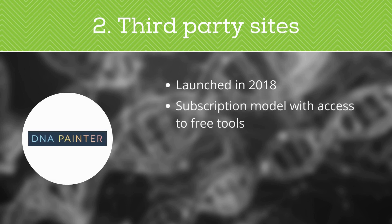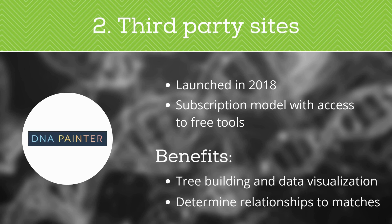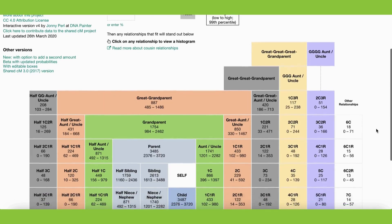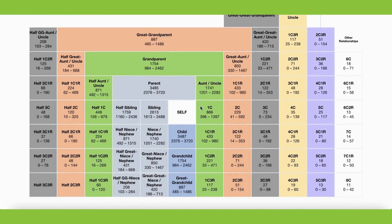Next up is DNA Painter. DNA Painter launched in 2018 as a free chromosome mapping tool. Since then, they've switched over to a subscription model, but they offer a handful of great tools for free. DNA Painter allows you to create handy visualizations and charts, as well as tools that help you figure out how you're related to your DNA matches. For example, the Shared cM tool allows you to figure out how you're related to your matches based on the amount of centimorgans you share — a very useful tool that we definitely recommend checking out.